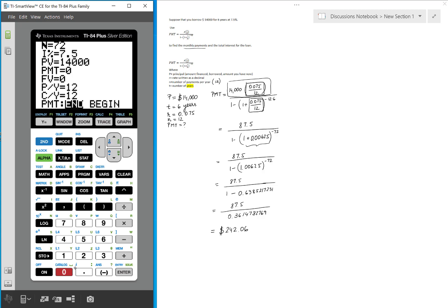We need to find the payment. But make sure the P slash Y, so the payments per year is 12. Because we are doing 12.